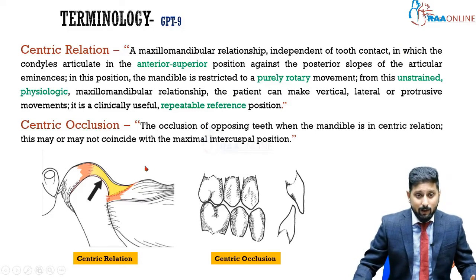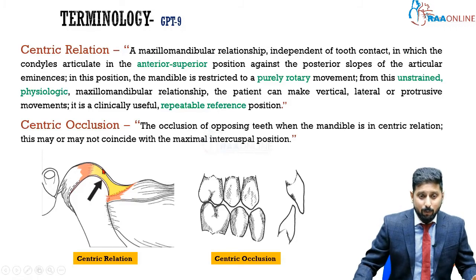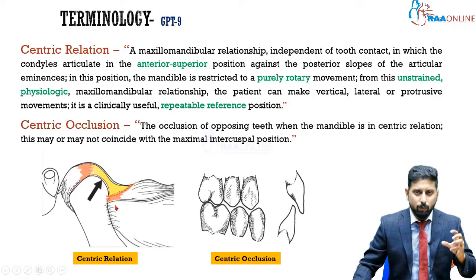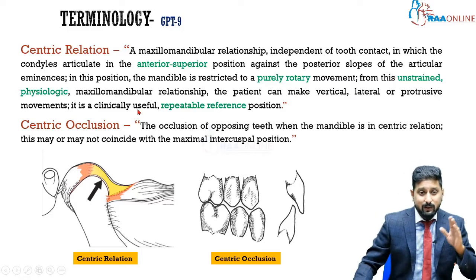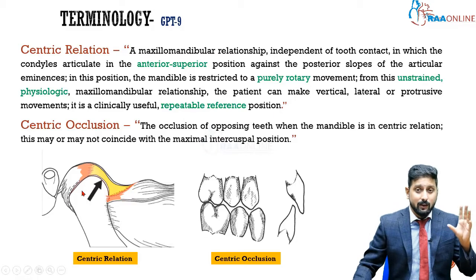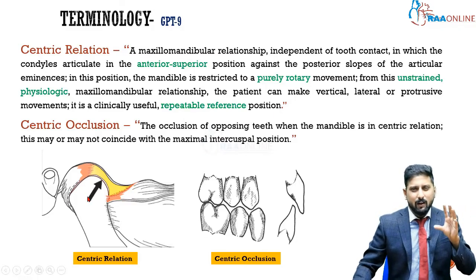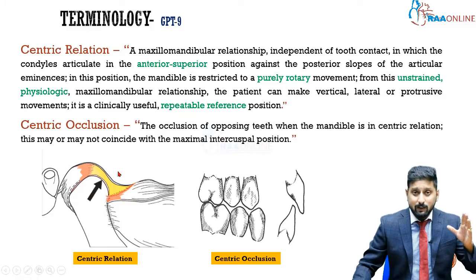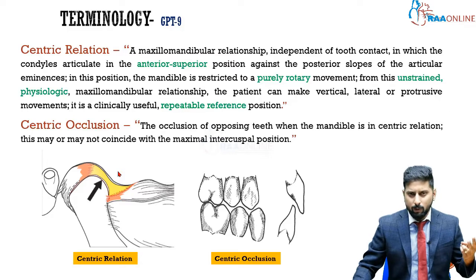In centric relation, the condyles articulate in an antero-superior position against the posterior slope of the articular eminence. In this position, the mandible can make a purely rotary movement — the condyle rotates without translating. This is a very comfortable, best-fit position for the condyle, from which the patient can make various movements: vertical, lateral, and protrusive.